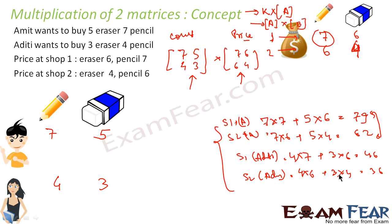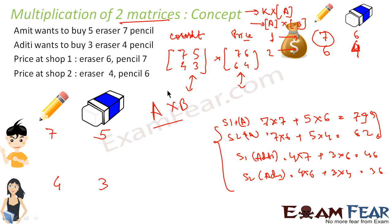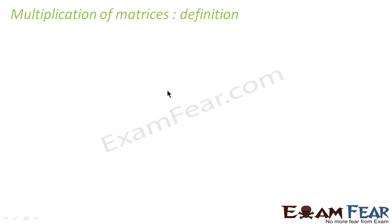I will explain how to do the multiplication of two matrices — it is a little tricky, so pay more attention. The reason I took this example was to show a real scenario where you need matrix multiplication. Both datasets — the count data and the price data — are in the form of matrices. The total cost is the count times the price, so you multiply them. Now let's go to the formal definition of multiplication of two matrices.